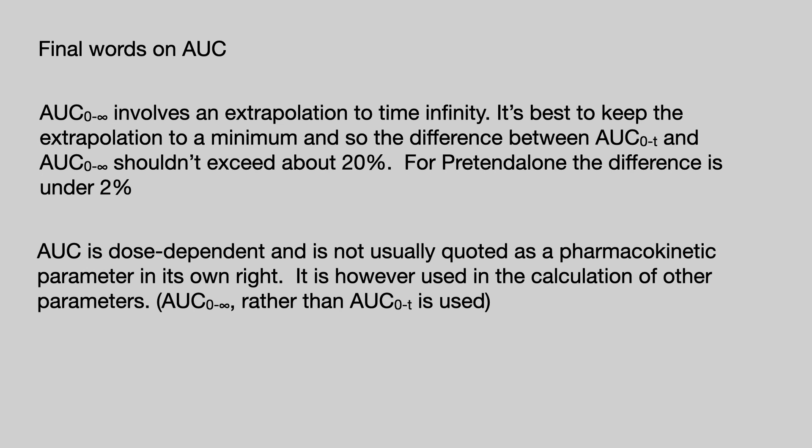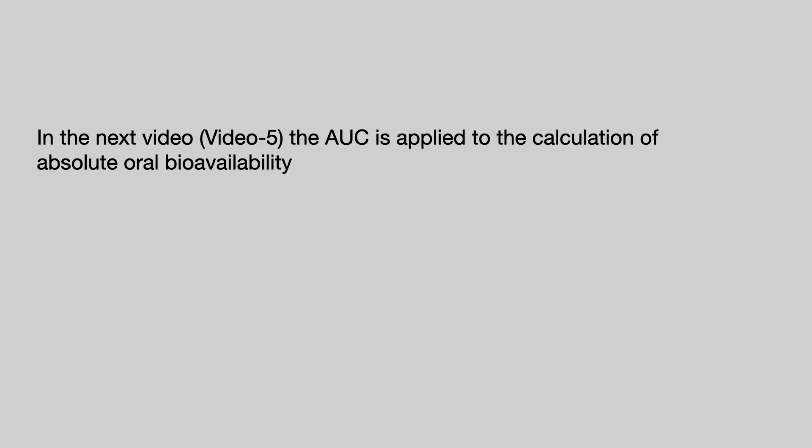The AUC is dose dependent, so it's not usually quoted as a pharmacokinetic parameter in its own right. It is used in the calculation of a number of other pharmacokinetic parameters, and when those parameters are calculated it is usually assumed you are using AUC 0 to infinity rather than AUC 0 to T. In the next video, Video 5, the AUC is applied to the calculation of absolute oral bioavailability.